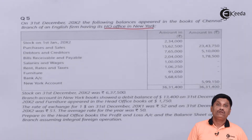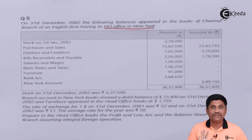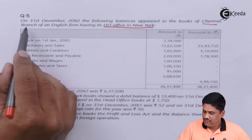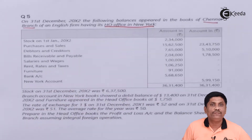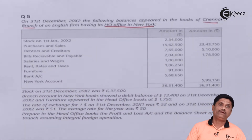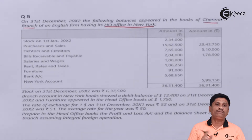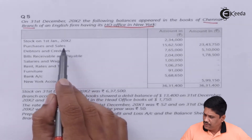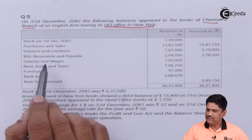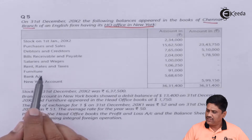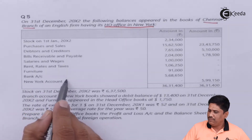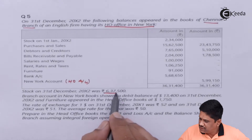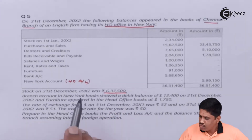The branch is Chennai branch, but the firm's head office is in New York. So the direction is slightly reversed. When you do conversion normally you multiply by the rate, but here you will divide. We will see that at the right point of time. Stock, purchases, sales, debtors, bills receivable, bills payable, salaries and wages, rent rates and taxes, furniture, bank account, and New York account — that is the head office account — will become the HO account for us. On 31st December 2002, stock given is 6,37,500 which will be converted at the closing rate.